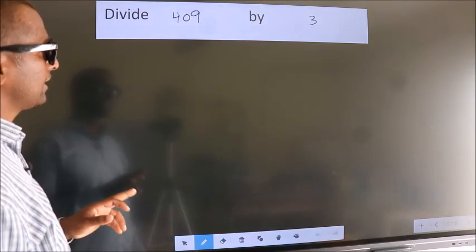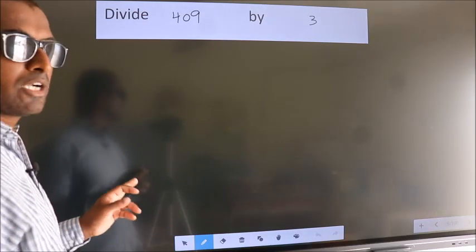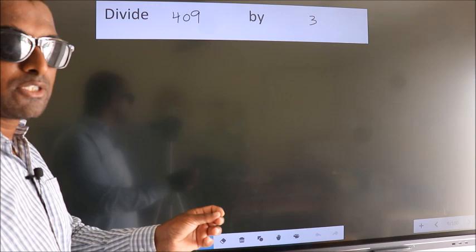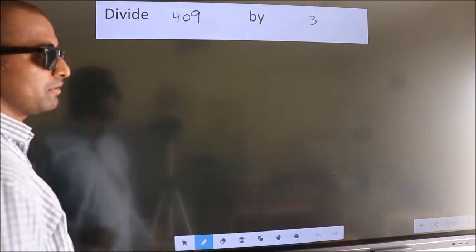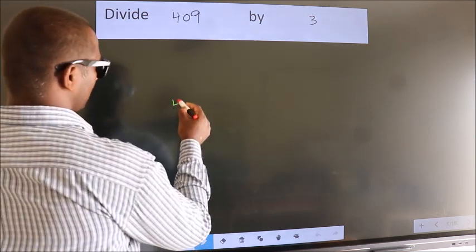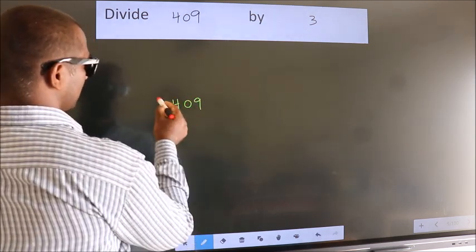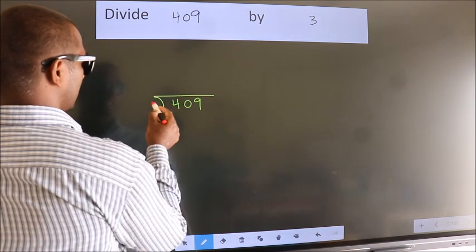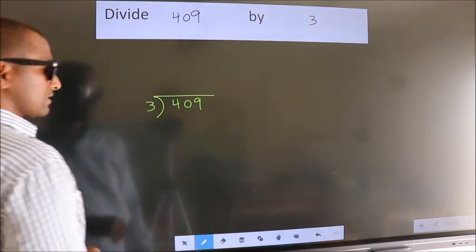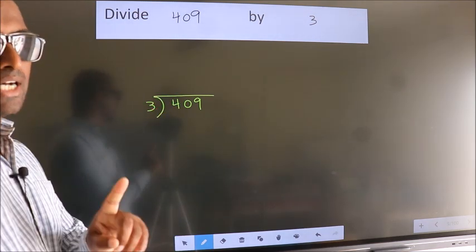Divide 409 by 3. To do this division, we should frame it in this way. 409 here, 3 here. This is your step 1.